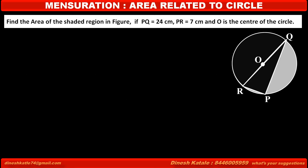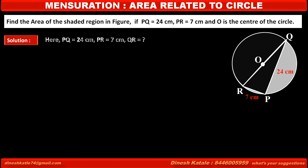Find the area of the shaded region in the figure, if PQ is equal to 24 cm, PR is equal to 7 cm, and O is the center of the circle. In this figure, three sides are given: PQ, PR, and QR. The length of PQ is 24 cm and PR is 7 cm, but the length of QR is not given. We have to find the area of the shaded region.